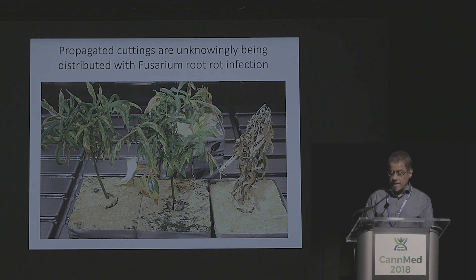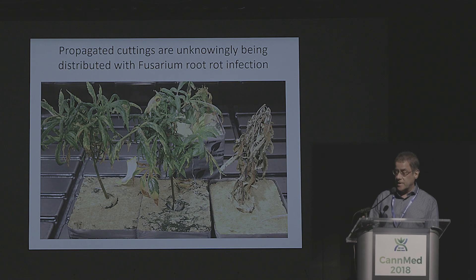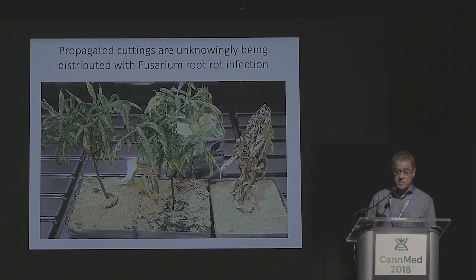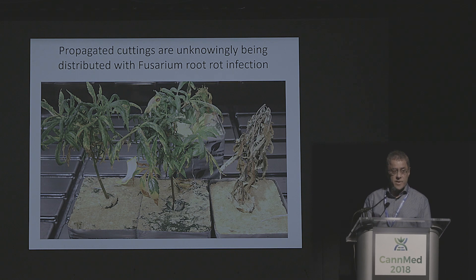We've also seen propagated rooted cuttings being sold on the marketplace that actually contained Fusarium infection. You wouldn't notice from the dark green leaves, but you see stunted growth, in some cases yellowing, and in extreme cases the plants are actually dead. We're seeing a lot of movement of these types of plant materials from one area to another, and that's going to cause some major problems with Fusarium in the future.